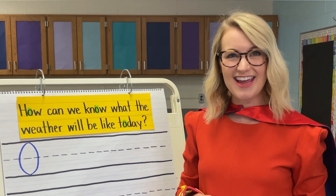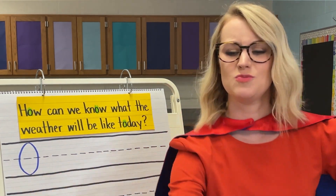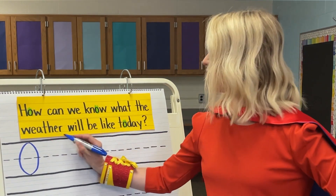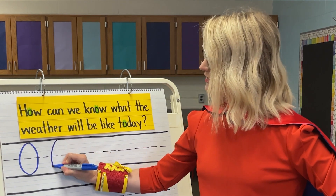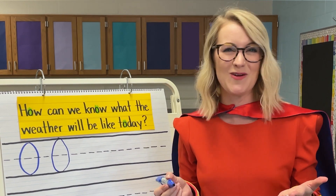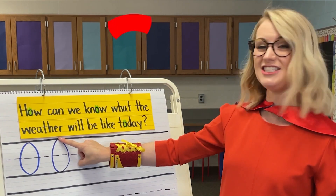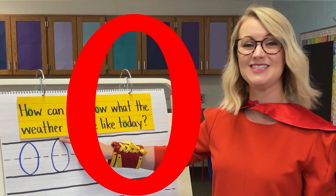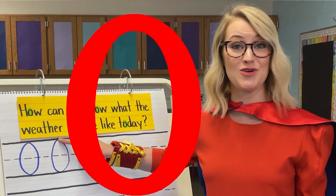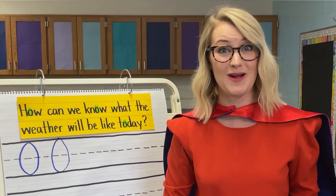Now we're going to learn how to write the letter O. We're first going to learn how to write the uppercase letter O. Watch me — we're going to start at the top, go around, down, and back up to the top. Now before you write it on paper, put your finger in the air and trace it with me. Start at the top, around, down, and back up to the top. Do it again. Start at the top, around, down, and back up to the top. One more time — start at the top, around, down, and back up to the top. Awesome, you are ready to write!